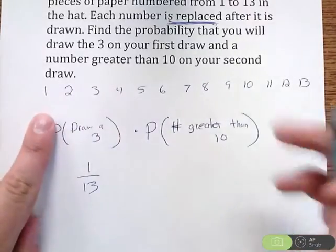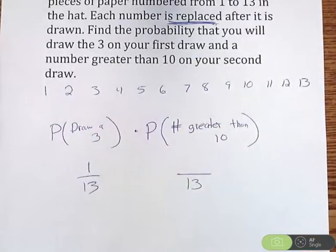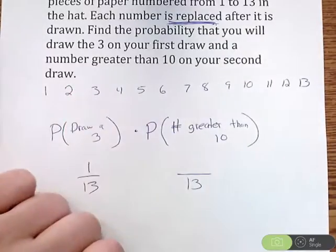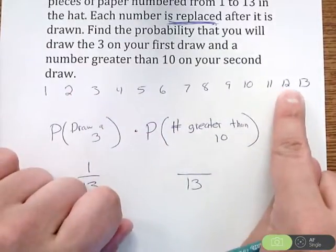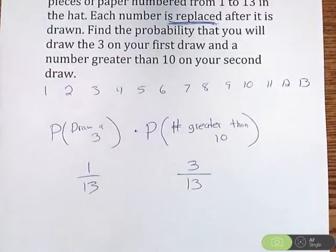So I have all 13 options still available. Let's count up how many different ways do I end up with a number greater than 10. Well, that happens if you have 11, 12, or 13. So 3 out of 13 chance.